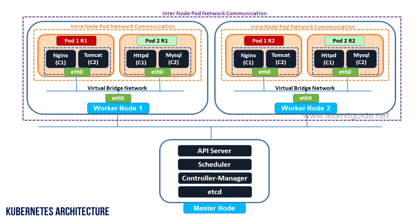Networking in any architecture or technology is very essential to understand if you want to deploy applications over the network. Understanding how the network works will also help you troubleshoot any network-related issues, so we must know what is happening in the network and how all the connections are established for communication.